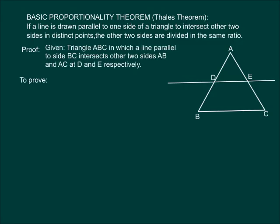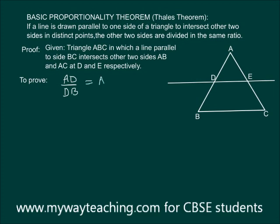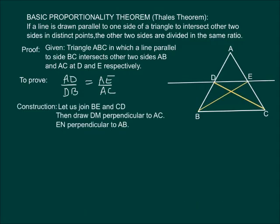We need to prove that AD by DB is equal to AE by EC. That is, the sides are divided in the same ratio.